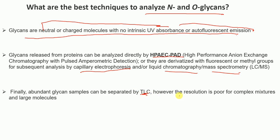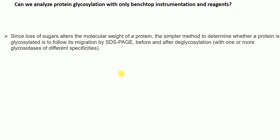Abundant glycan samples can also be separated by TLC (thin-layer chromatography), though resolution is poor for complex mixtures and large molecules. The best techniques available to analyze N- and O-glycans are HPAEC-PAD and LC-MS.